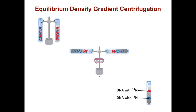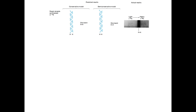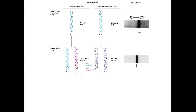These are their actual results. You can't distinguish between the conservative and the semi-conservative model at this stage because the bacteria are grown only in the heavy nitrogen. But when you switch the medium, for the conservative model you would get the first doubling — one band of simply heavy DNA and then one band of light DNA. Under the semi-conservative model, you would get one type of band somewhere in between the heavy and light, and that's what you see: a band corresponding to a DNA molecule with one strand made with heavy nitrogen and the other with light nitrogen.